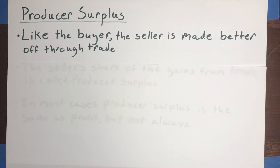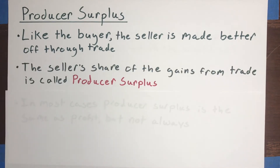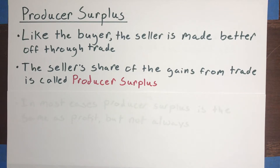We refer to those as gains from trade. The amount by which the buyer and seller together are made better off are the gains from trade. The seller's share of those gains from trade economists call the producer surplus, which is just the flip side of consumer surplus.